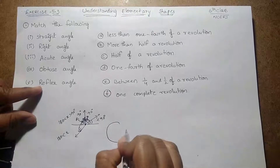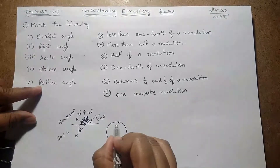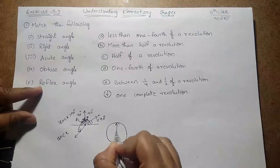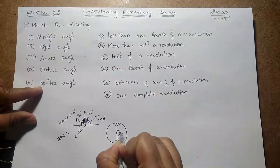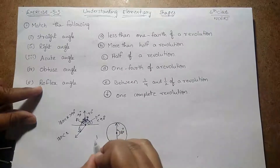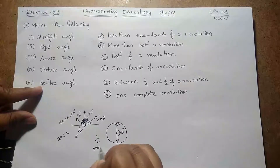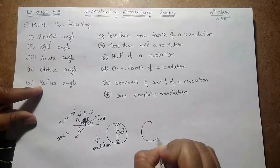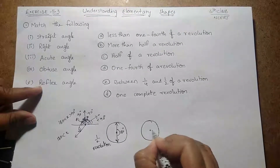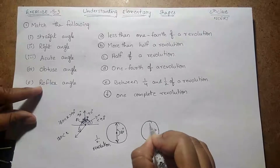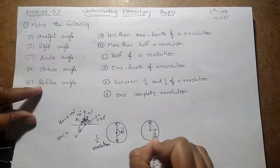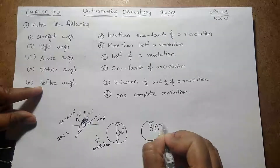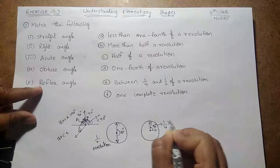If you make a half revolution on a clock, that is nothing but a straight angle — that is a half revolution. Next, if you make one-fourth revolution on the clock, that is nothing but 90 degrees, so that is a one-fourth revolution.